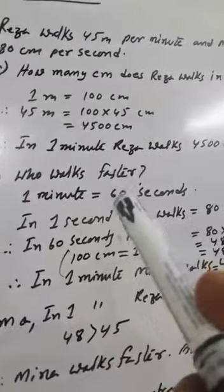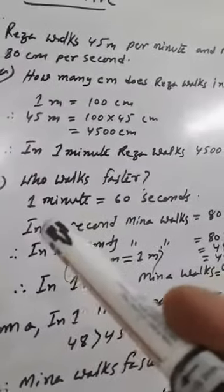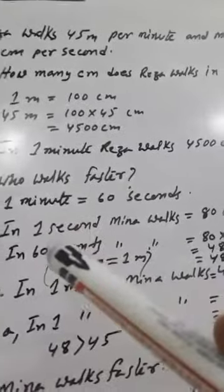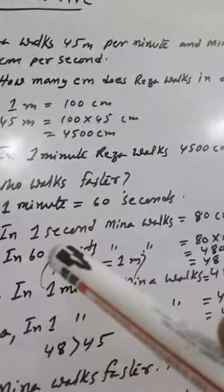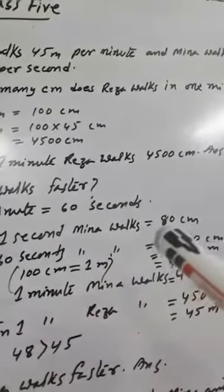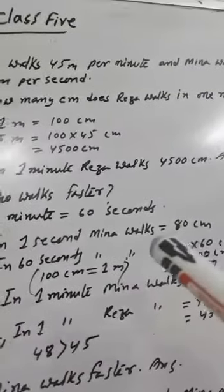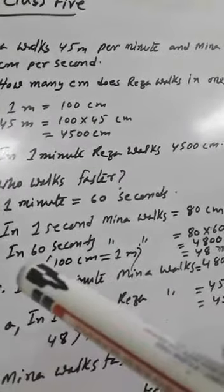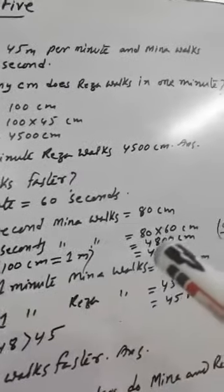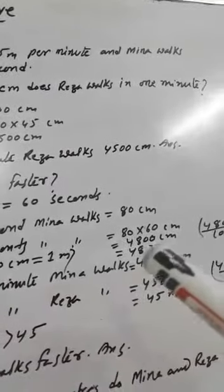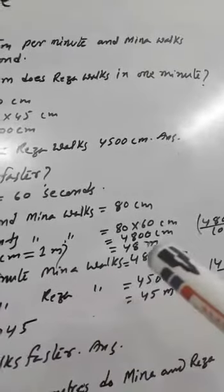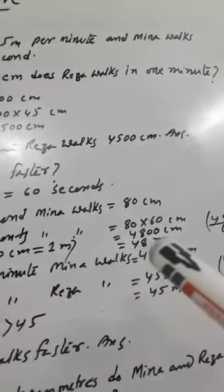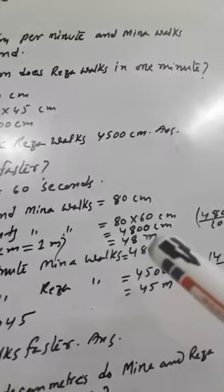Who works faster? 1 minute equals 60 seconds. In 1 second, Meena works 80 centimeters. Therefore, in 1 minute or 60 seconds, Meena works 80 multiplied by 60, which equals 4800 centimeters.